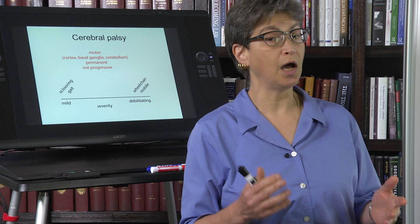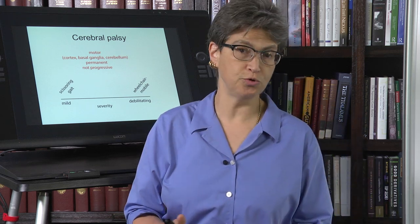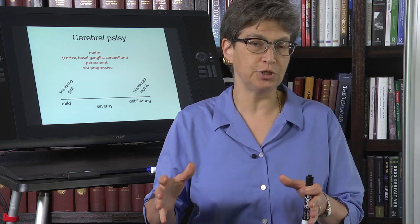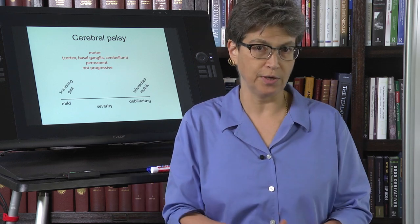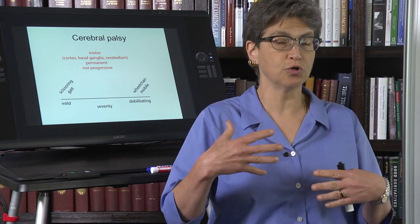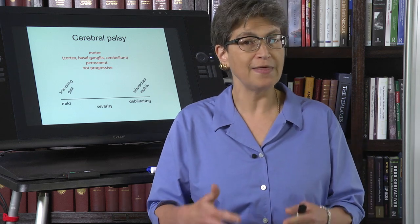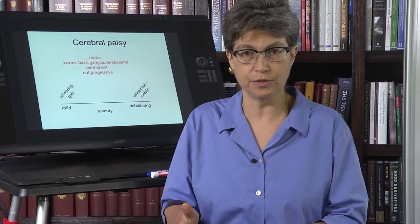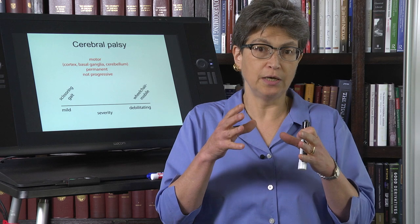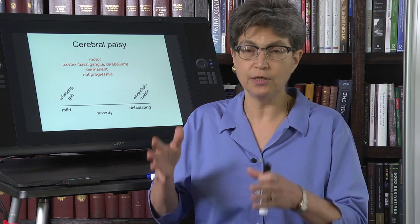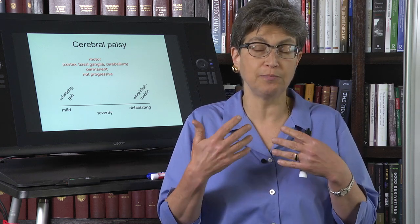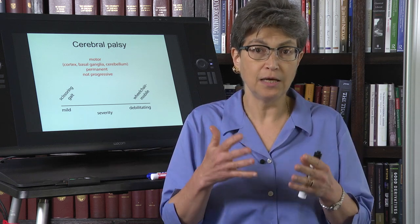Cerebral Palsy is a relatively common condition affecting roughly two in a thousand people. It results from perinatal damage to any of the motor pathways. There are different types depending on which pathway is affected. For example, if the corticospinal tract is affected, that creates spastic cerebral palsy. Whereas if the basal ganglia are affected, it produces an athetoid cerebral palsy. If the cerebellum is affected, it can produce an ataxic cerebral palsy.